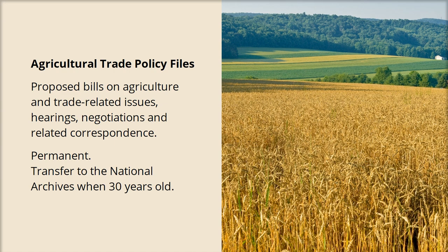Record schedules help us make sure that everyone in the agency is retaining records for the same standard amount of time. And they help us ensure that future generations will have access to the information they need to understand our part of history. A record schedule reads: Agricultural trade policy files — proposed bills on agriculture and trade-related issues, hearings, negotiations, and related correspondence. Permanent: transfer to the National Archives when 30 years old.